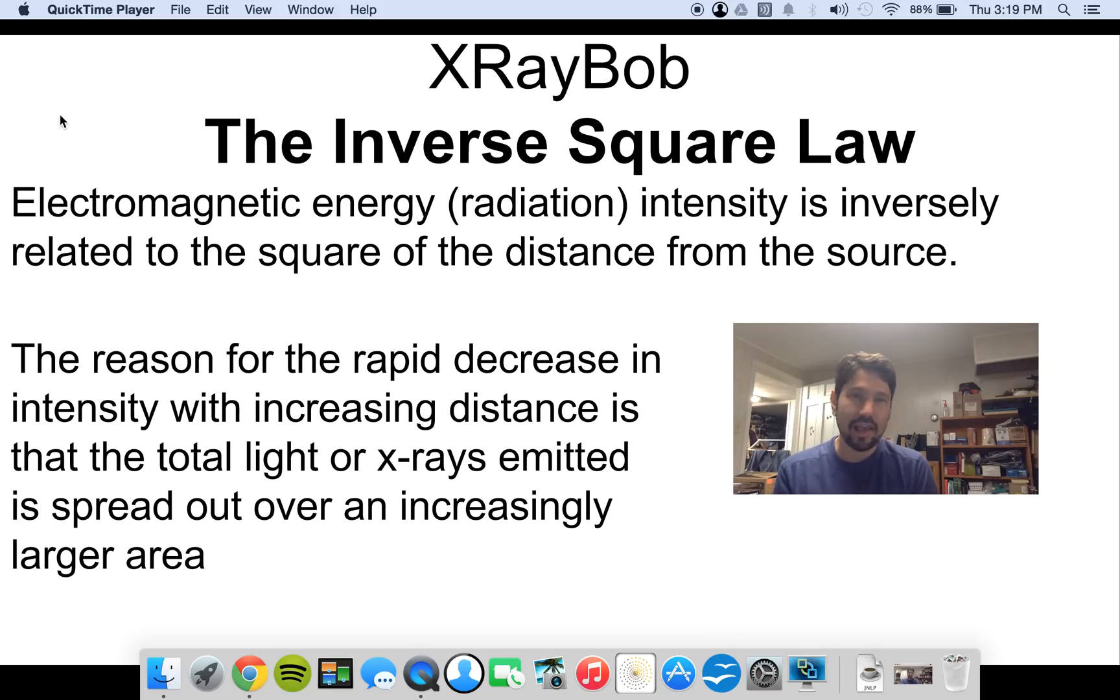Electromagnetic energy, radiation intensity, is inversely related to the square of the distance from the source. So if you're one foot away from the X-ray tube, you're going to have one intensity, and if you're two feet away, it's going to be one quarter that intensity.